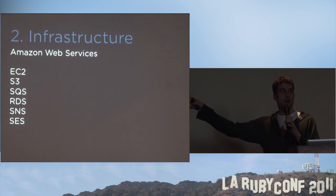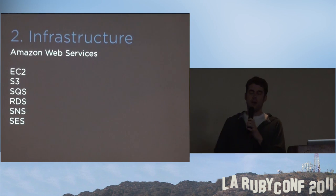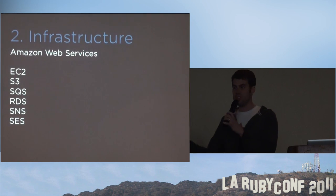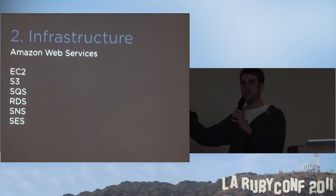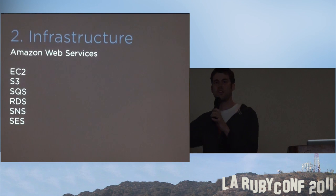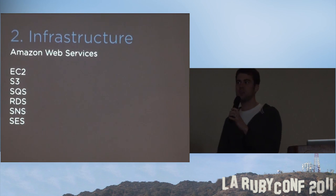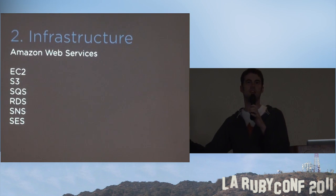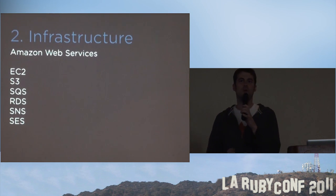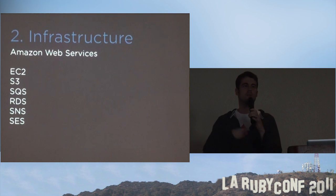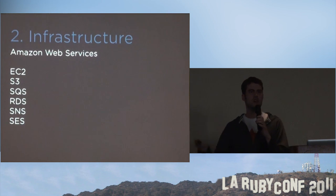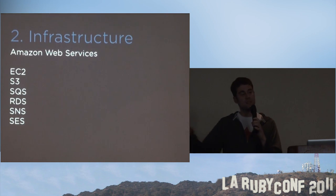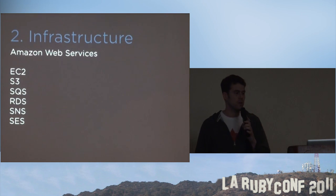The second group is infrastructure as an API — this is where things get really interesting. Amazon Web Services is like an API to Linux, an API to file storage, an API to message queuing, et cetera. That's pretty cool.